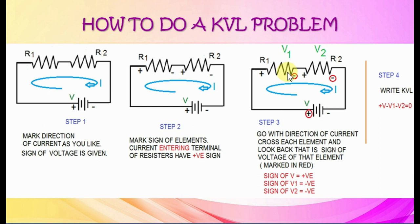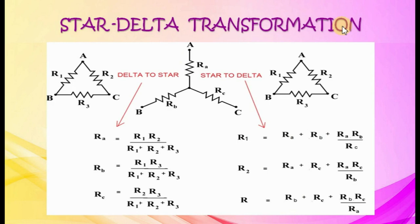Star-delta transformation. Take a delta connection with resistances R1, R2, R3 and a star connection with resistances RA, RB, RC. To transform delta to star, equations to find RA, RB, RC are given. To transform star to delta, equations to find R1, R2, R3 are also given. Just substitute values and you can transform one connection to the other.